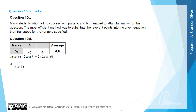The examiner's report noted that many students who had no success with parts A and B still managed to attain full marks for this question. The most efficient method was to substitute the relevant points into the given equation and then transpose for the variable specified. 54% of students got part one of part C correct.